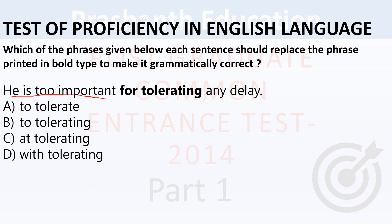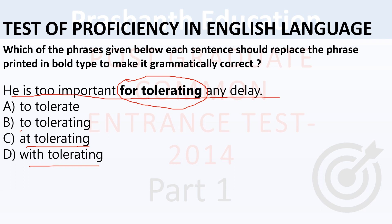Next grammar correction: 'He is too important for tolerating any delay.' The error here is 'for tolerating' — 'for' is incorrect. Options: to tolerate, to tolerating, at tolerating, with tolerating. 'At tolerating' and 'with tolerating' are wrong. 'To tolerating' is also incorrect. The correct form is: 'He is too important to tolerate any delay.'